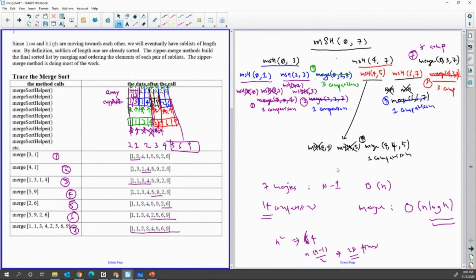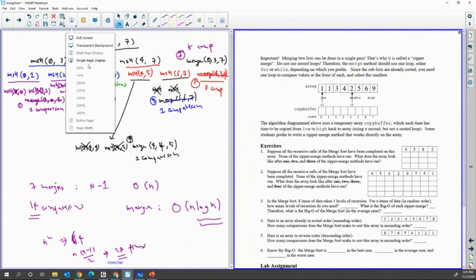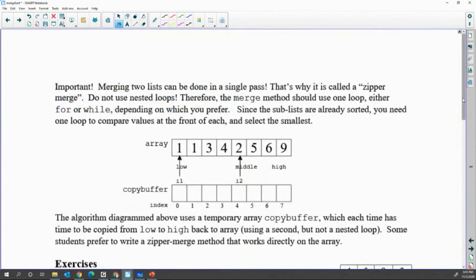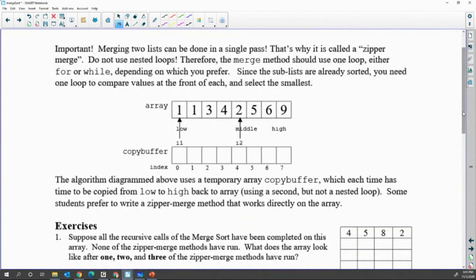We do the last first, then 5, 9, 2, 6. Then finally we merge the first half and second half. There are 7 merges that happen. You also need to understand the zipper merge each time. We call this algorithm zipper merge.